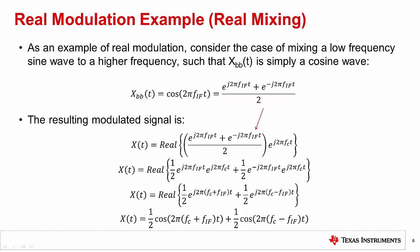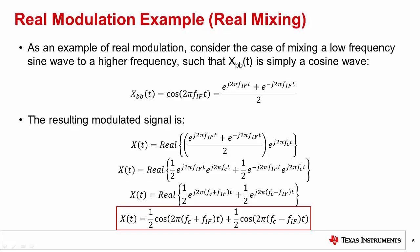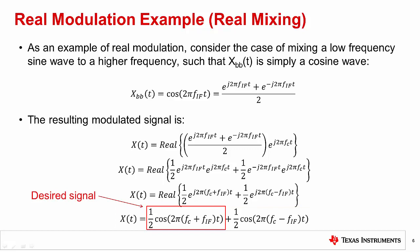Plugging this into the analytic definition of x(t), combining exponential powers, and then using Euler's formula, we can see that the resulting modulated signal is the sum of two real cosine waves at the carrier frequency plus and minus the IF frequency. However, only one of these signals is generally desired, and the undesired signal, called the image, must be filtered out. One way to solve this problem is to use complex modulation.